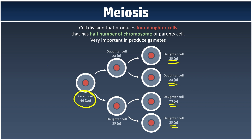Each of the daughter cells has only half the number of chromosomes as their parent. As we had in the beginning, we have 46 chromosomes, and in the end we only have 23, which is only half. So this is why in the beginning this is the diploid cell, and at the end of meiosis we have the haploid daughter cell. Haploid basically means half the number of the original chromosomes.